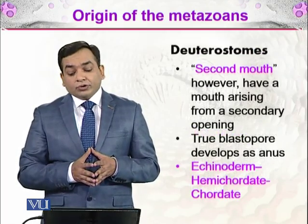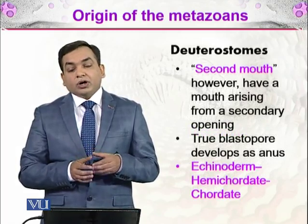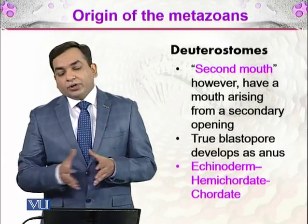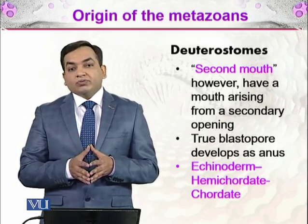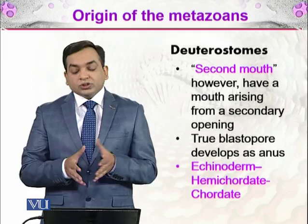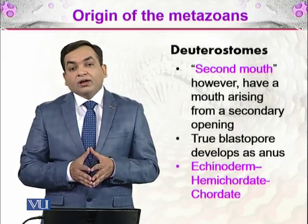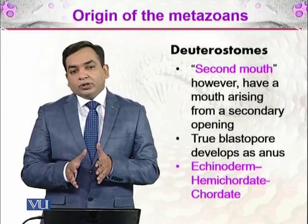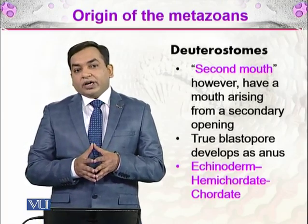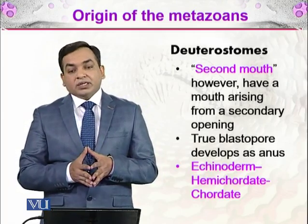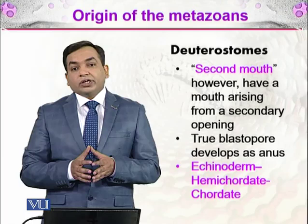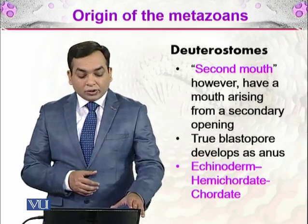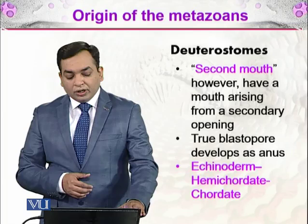Then come the deuterostomes, organisms which contain a second mouth. Their mouth arises from a secondary opening, meaning the mouth does not arise from the primary blastopore. Instead, the true blastopore develops as an anus. The organisms included in the deuterostomes are echinoderms, hemichordates, chordates, and other complex organisms.